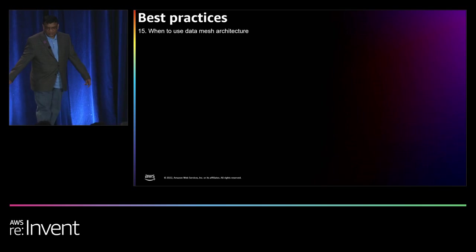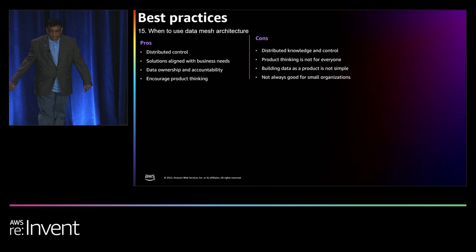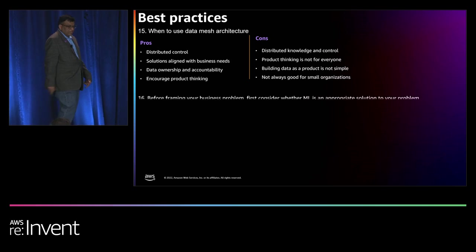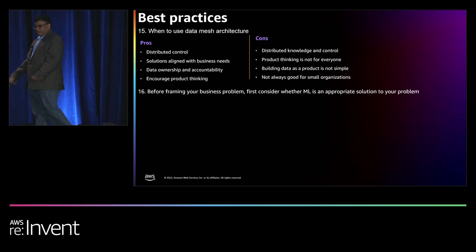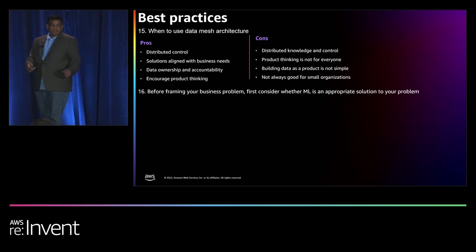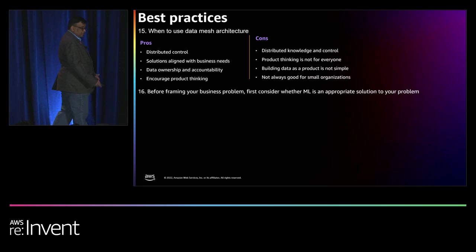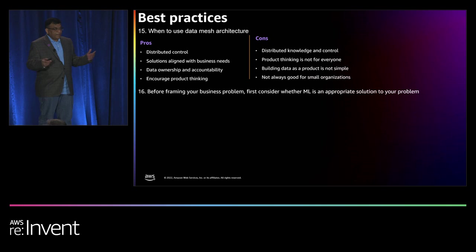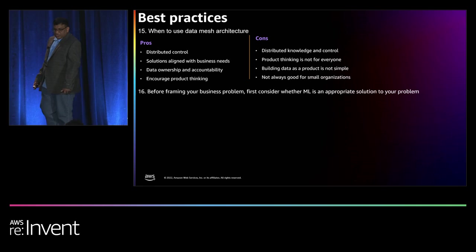Let's talk about when to use data mesh. Data mesh is good when you have multiple data producers and data consumers. But it is not good if you don't have a data-as-a-product mindset, and it is not good for small organizations — if you don't have many data producers and many data consumers, it is not good to do data mesh. Innovating for the future with machine learning: first, think about your business problem and see if it can be resolved with a business rules engine or programmatically before thinking about solving it with machine learning. But if you want to do machine learning, we have various options: AI services for application developers to build business intelligence applications, Amazon SageMaker for data scientists to build end-to-end machine learning workloads, and ML frameworks for experienced ML experts based on their choice. These are what we recommend — the right tool for the right job using AWS purposeful data services.